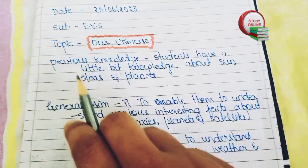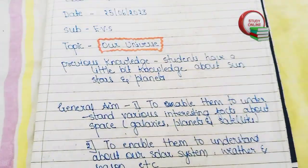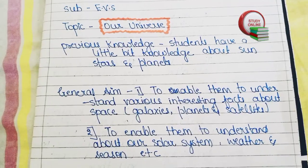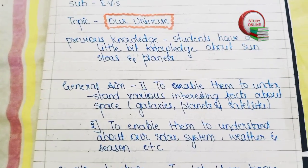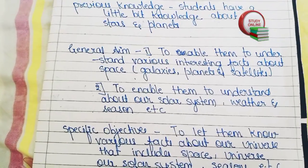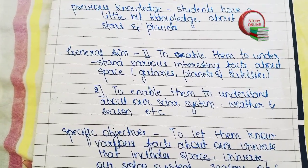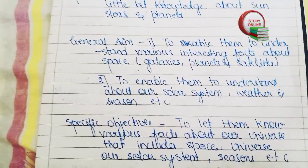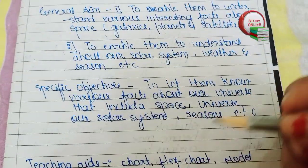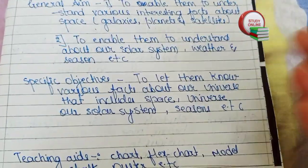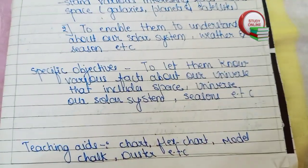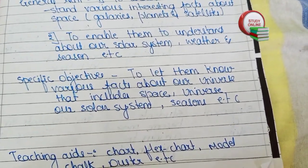For previous knowledge, we have to write what students are already aware of — so they have a little bit of knowledge about the sun, stars, and planets. For general aim, we write what we basically want to teach students and what they will learn. For specific objectives, we write our motive and what we want to teach. Here we want to tell them about the solar system, galaxies, and the universe. For teaching aids, you write all the things you are going to use while teaching.